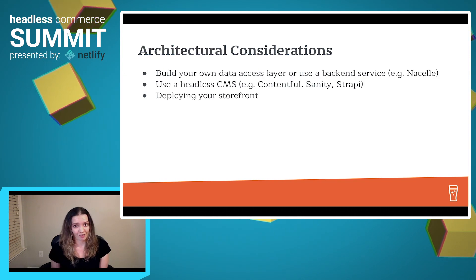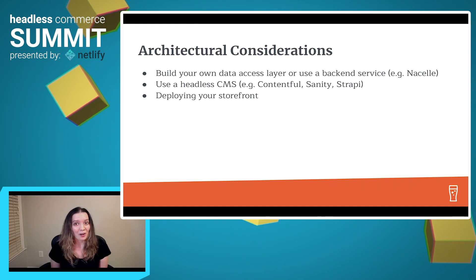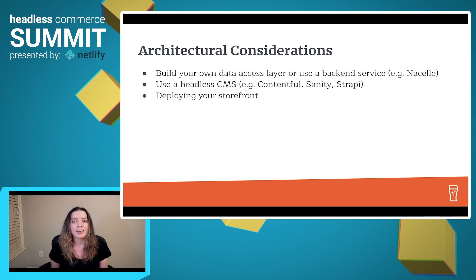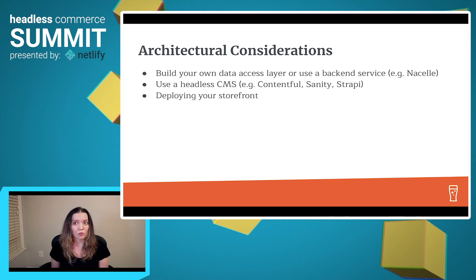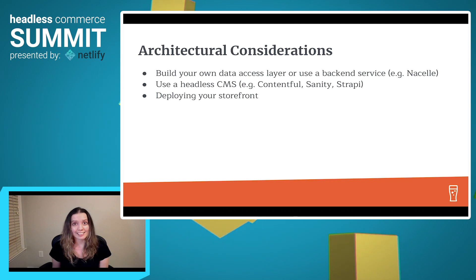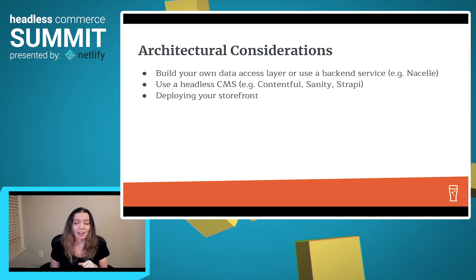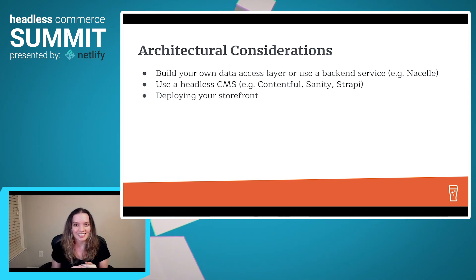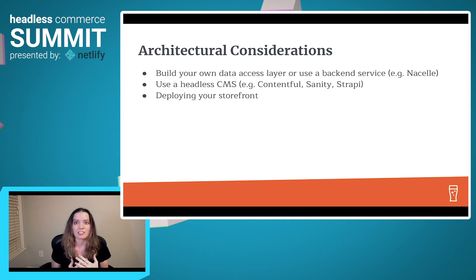Now for some architectural considerations. First is the data access layer. If you go headless, you have to choose between creating your own data layer or using a backend service. This is where Nacelle comes in — it handles the data layer so you can focus on building components for the front end. If you want to handle it yourself, you'll need to build a database for product data and CMS content, a backend API, a backend authentication system, a connector and object loader, a cart system, business logic, a dashboard for indexing and merchandising, and checkout and customer account integration. There's a lot that goes into the data layer, so take time to decide.